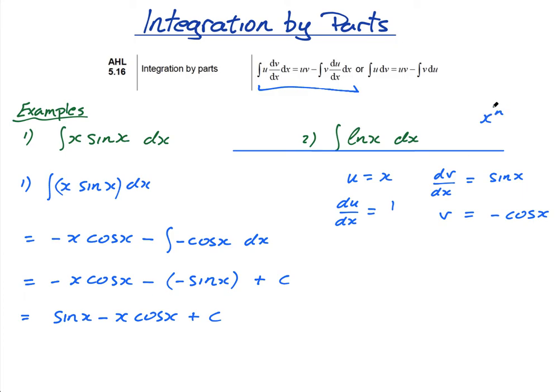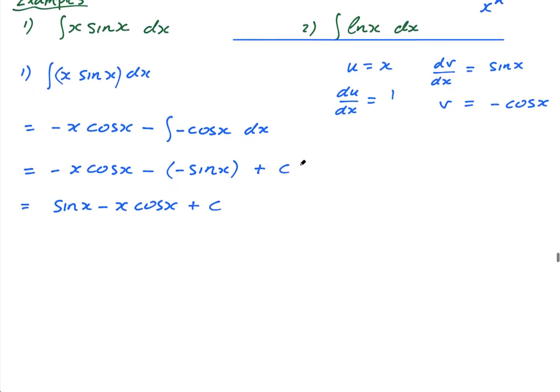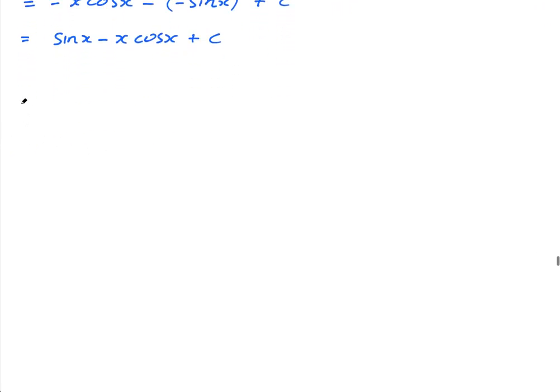So, to simplify what to choose for u and dv dx, choose whatever is easiest to integrate for dv dx. That's the kind of number one rule. And then the second rule is, choose x to the n to be your u. The only exception is when you have ln of x, because you're going to see now, ln of x is really not nice to integrate. In fact, logs should be the last thing you choose for dv dx. Okay, let me show you how to integrate ln of x, the integral of ln of x dx, using integration by parts.